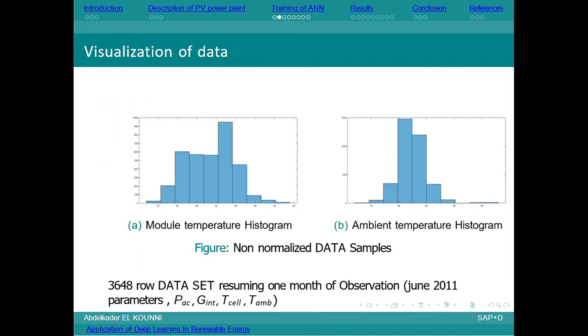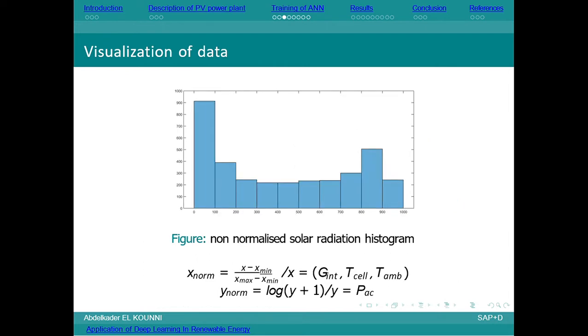We had 3,648 data sets resuming one month of observations. Since we were working on supervised machine learning, we used PAC as an output to the model, which is the target. The inputs were solar radiation, cell temperature, and ambient temperature. All parameters were having different ranges that we needed to preprocess and normalize to make them in the same range.